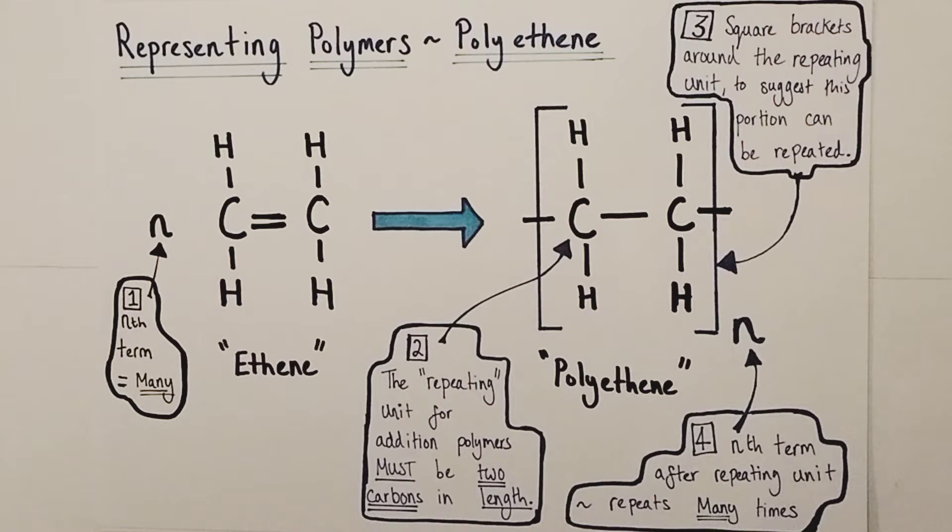Let's start by focusing on the monomer. The monomer in this example is the molecule ethene, a member of the homologous series known as the alkenes. It's a two carbon alkene. The first thing I'd like to draw your attention to is we've drawn an nth term in front of the monomer. In this context that means many, a nondescript but large number. We are using a lot of ethene molecules to form our polymer, our polyethene in this reaction.